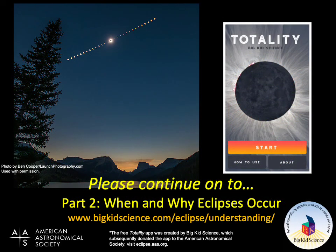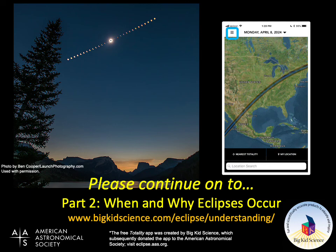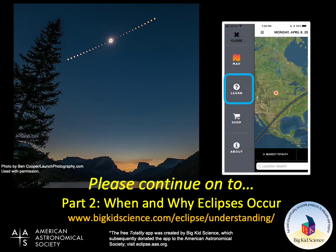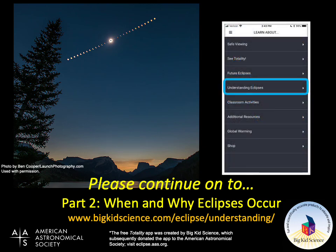To find your best opportunity to experience a total solar eclipse, be sure you are using the Totality app created by Big Kid Science and brought to you by the American Astronomical Society. Now I hope you'll continue on to Part 2 of this video, which you'll find after you start the app by selecting the main menu, then tapping Learn, and selecting Understanding Eclipses. You can also find the video on the web at the link on the screen.